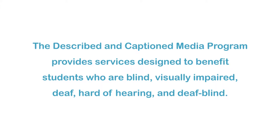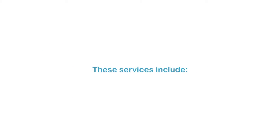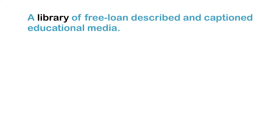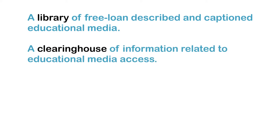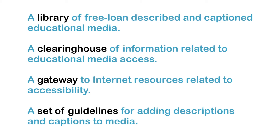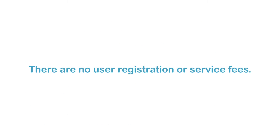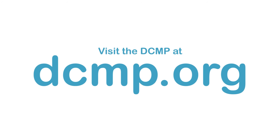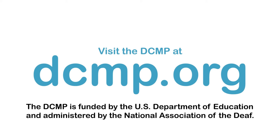The Described and Captioned Media Program provides services designed to benefit students who are blind, visually impaired, deaf, hard of hearing, and deafblind. These services include a library of free loan described and captioned educational media, a clearinghouse of information related to educational media access, a gateway to Internet resources related to accessibility, and a set of guidelines for adding descriptions and captions to media. There are no user registration or service fees. Visit the DCMP at dcmp.org. The DCMP is funded by the U.S. Department of Education and administered by the National Association of the Deaf.